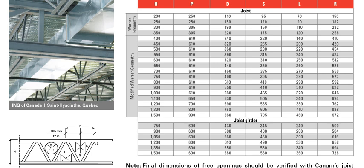So using open web steel joists is very advantageous. Now, how can we check if the duct can fit through the opening or not? We have three cases here and we can check each case individually. The first case is if we have a circular duct with a diameter D.